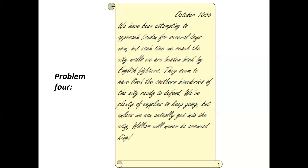Problem number four: 'We've been attempting to approach London for several days now, but each time we reach the city walls we are beaten back by English fighters. They seem to have lined the southern boundaries of the city ready to defend. Unless we can actually get into the city, William will never be crowned king.' So he had a problem actually getting and taking control of London once he had won the Battle of Hastings.